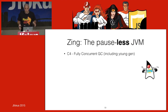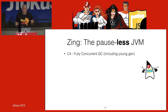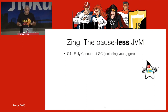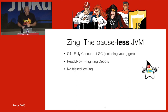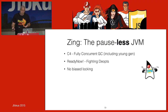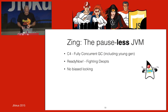A bit about Zing: we have a fully concurrent GC. We have ReadyNow, which reduces deoptimizations by remembering optimizations from run to run. We have no biased locking — meaning you won't hit stop-the-world on lock unbiasing. We do still have some stop-the-world pauses, but we aim to make them smaller than OS noise.